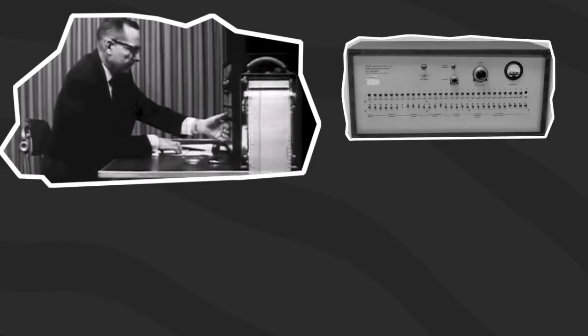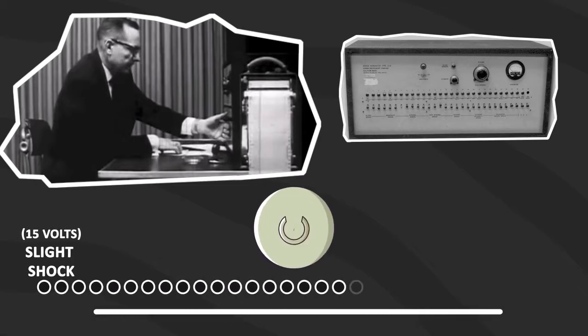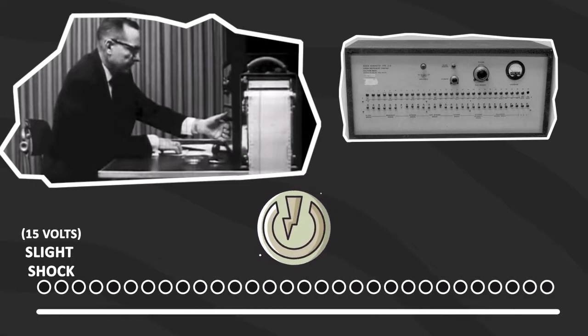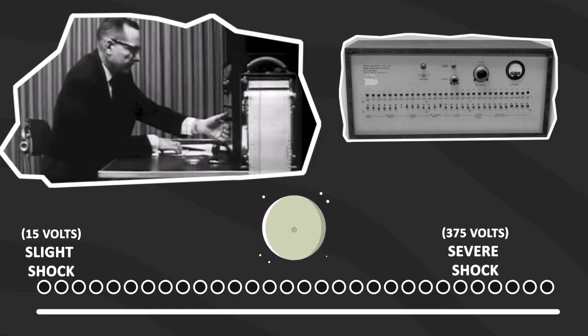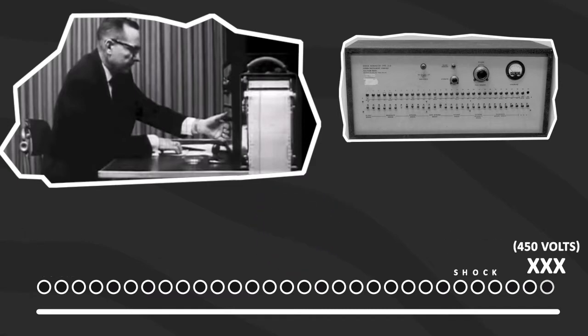The teacher and the experimenter went into a room next door, and this room contained an electric shock generator with rows of switches marked from 15 volts, which is a slight shock, to 375 volts, which is severe shock, even all the way up to 450 volts, which was marked with three X's.